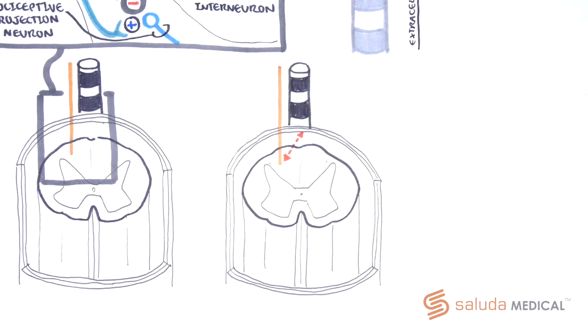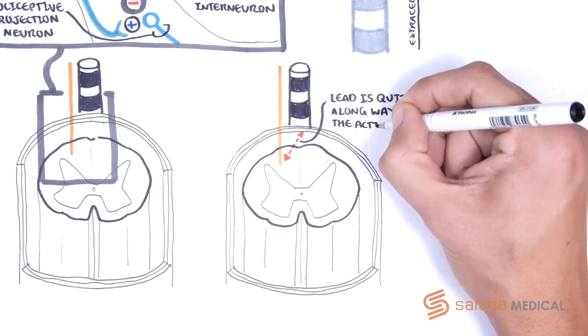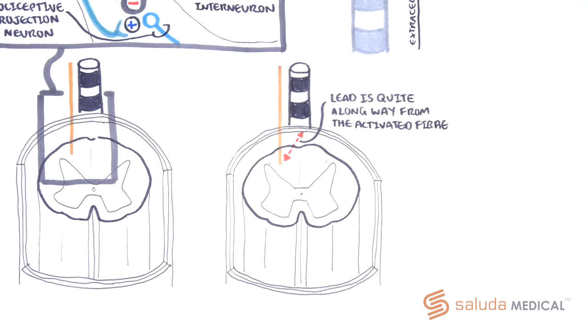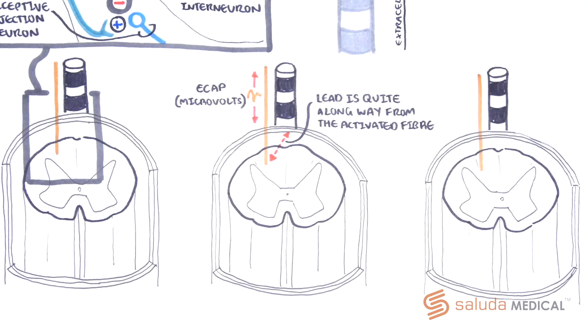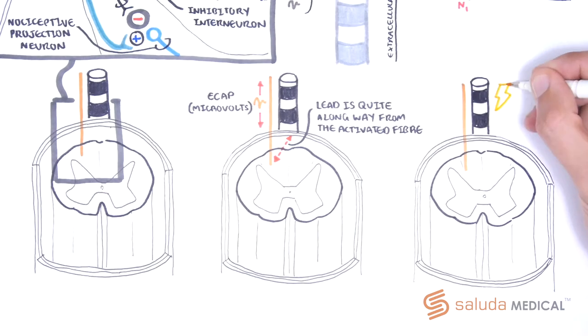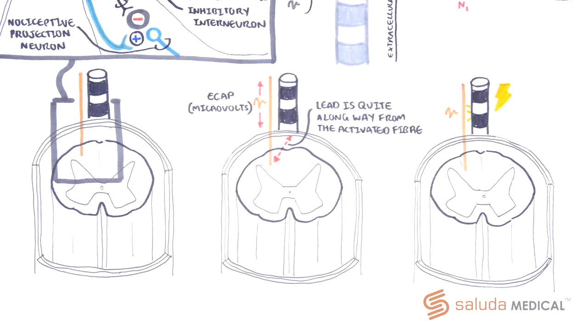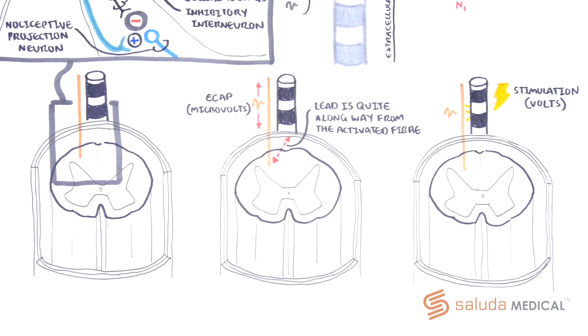As the lead is quite a long way from the activated fibers on a cellular scale, the size of the recorded response is small and measured in microvolts, one microvolt being one millionth of a volt. Whereas the stimulus applied to generate these ECAPs is in the order of volts, which is six orders of magnitude larger, just fractions of a second before the recording. To put the difficulty of being able to achieve such a recording into perspective, that is like you trying to listen to this video while Formula 1 cars pass by you.